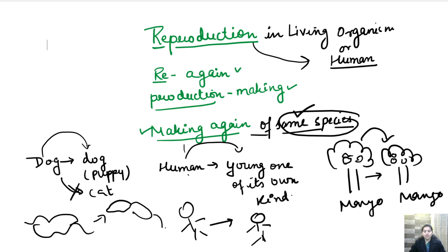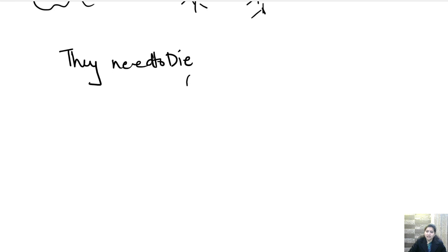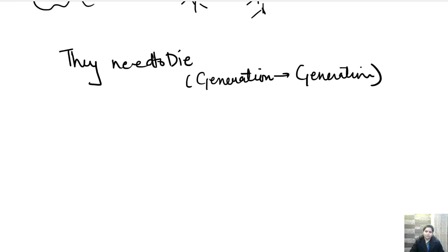Now the question is: why are we reading this chapter and why is it important? We know that every now and then people die. Living organisms are mortal, so they need to die. But still the generation keeps on growing. There is always one generation after another. So how does this happen? This happens because of the process of reproduction.